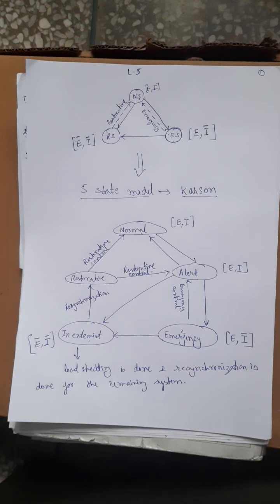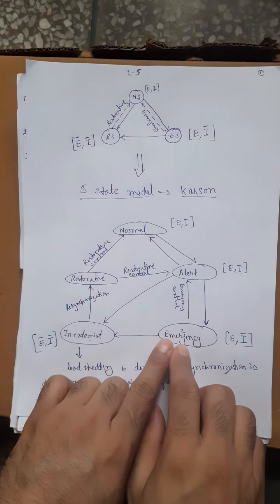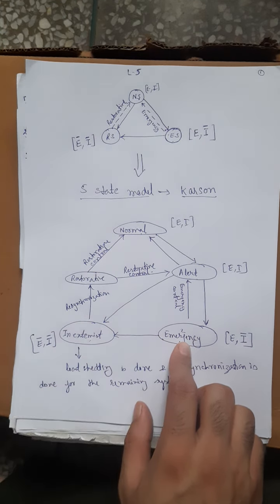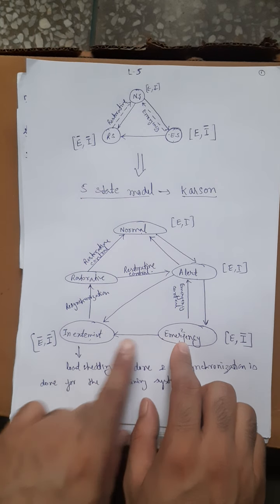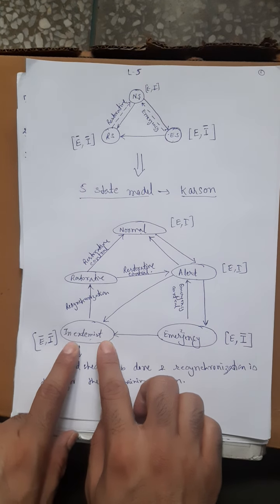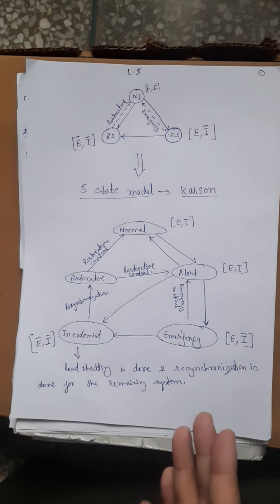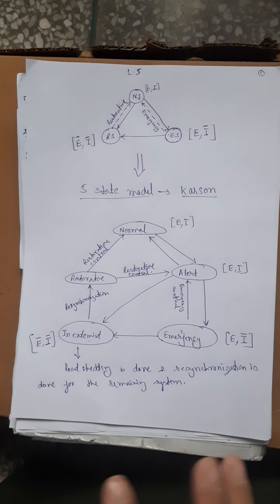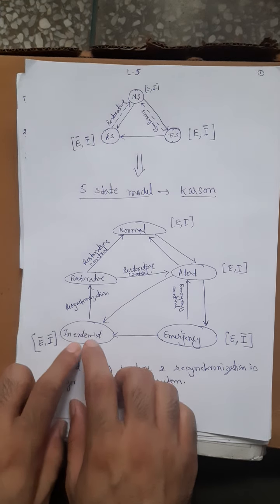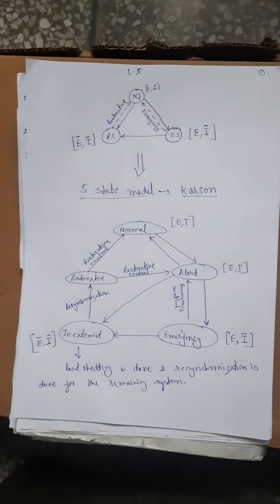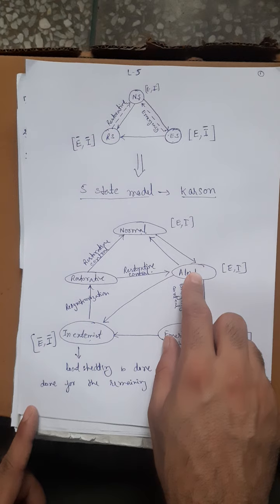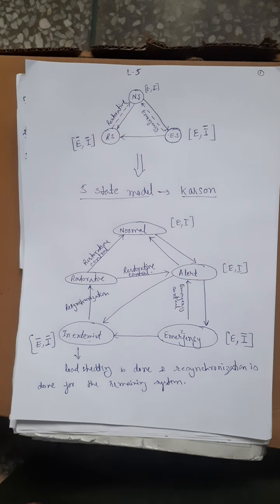Additionally, in the five-state model, from emergency state, the system moves to the extreme state rather than directly to restorative state. Extreme state means many constraints are violated; the system must be resynchronized before returning to the restorative state. This is why the five-state model is more adaptive than the three-state model.